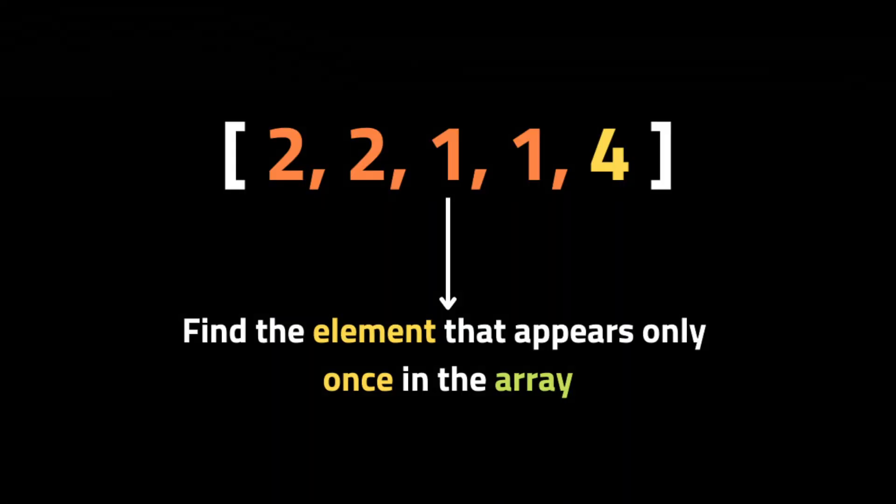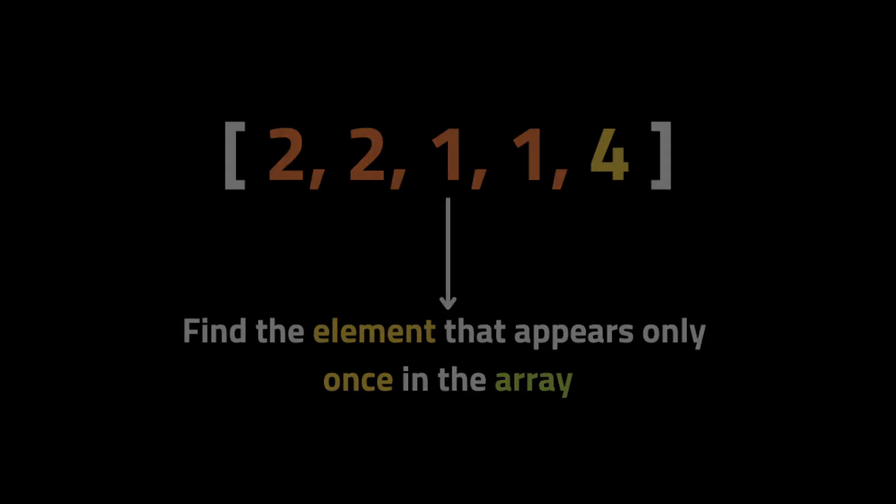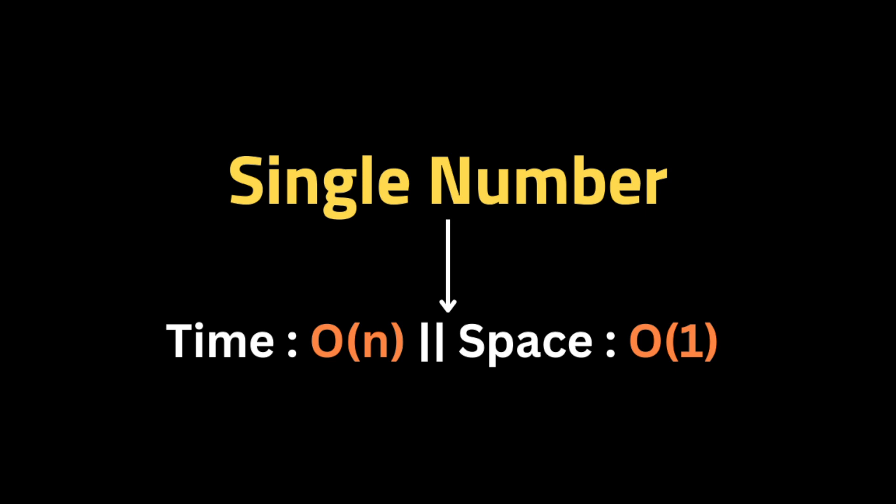The problem is that they give us a non-empty array of integers, and the task is to find the element that appears only once in the array. For example, in this input array, the element that appears only once is four. The problem requires a solution with linear runtime complexity and only constant extra space.